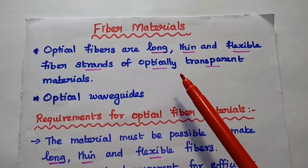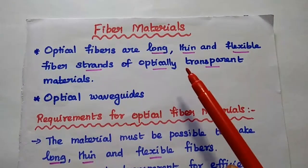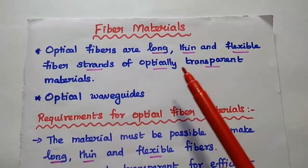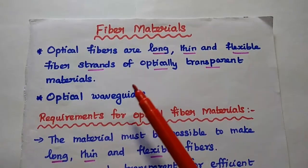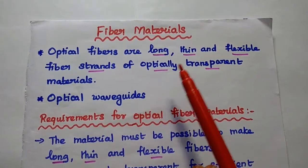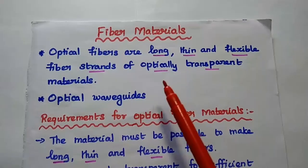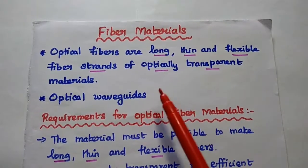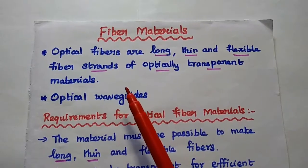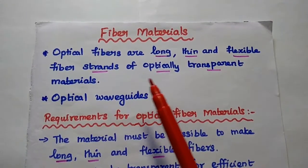Dear students, now we are going to discuss fiber materials in detail. In general, optical fibers are long, thin and flexible fiber strands of optically transparent materials. Here strands means optical thin wires.